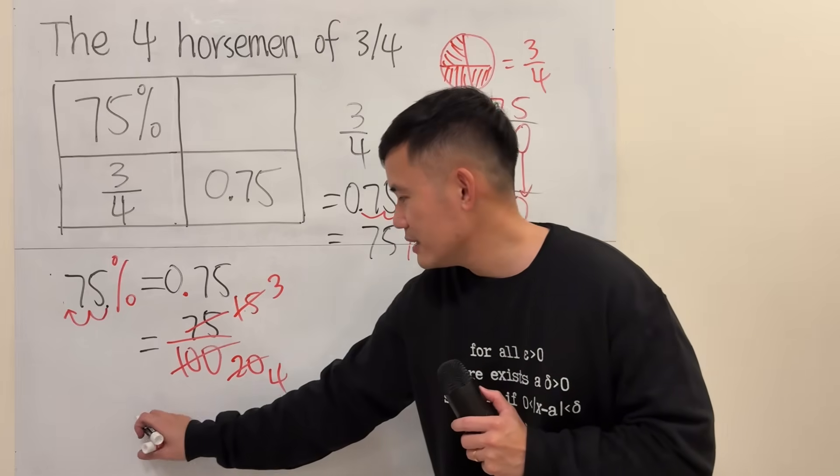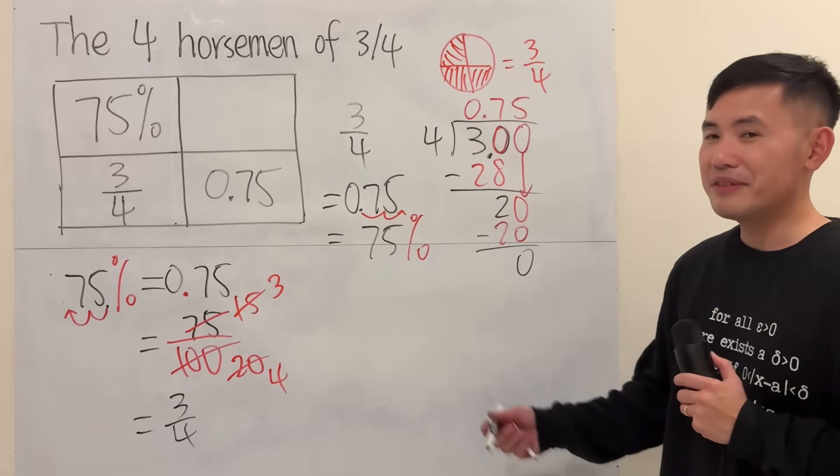So you can see the answer is 3 over 4. Math is hard sometimes.